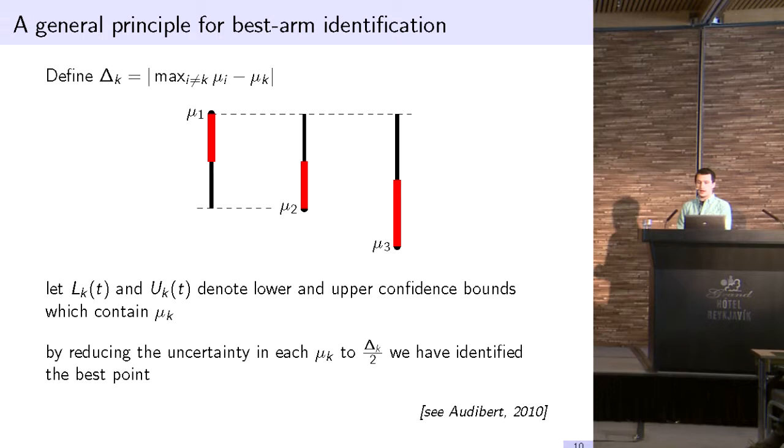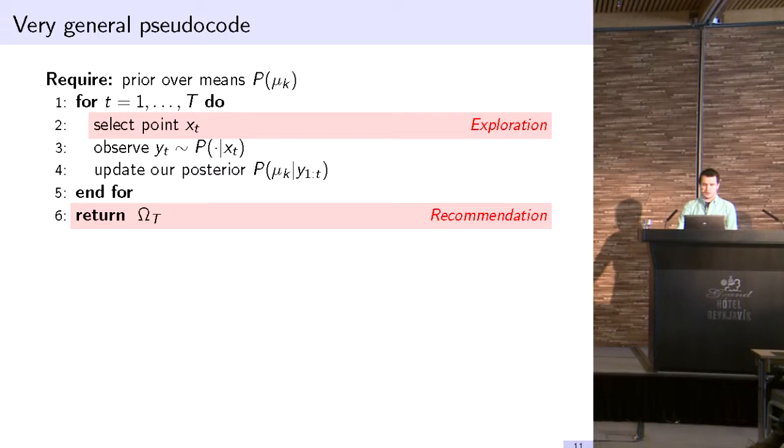Here's really general pseudocode for this approach. I start with a prior over my means. For iterations one through T, I select a point, observe the noise corrupted value at that point, and update my posterior. I do that for T iterations, and at the end I return some recommendation. These are the two important steps: the exploration step and the recommendation step once I get to the end.